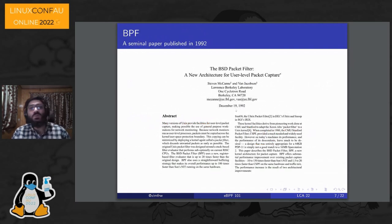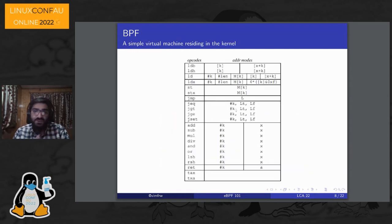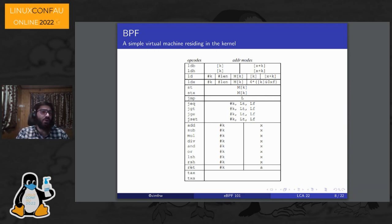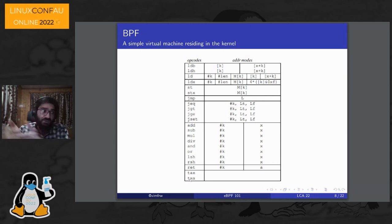In 1992, the BSD Packet Filter paper was published — a seminal paper where the folks designed a novel architecture to implement TCP dump optimally. They implemented a VM, a simple VM that resides in the kernel. It could not do much: just a bunch of loads, a bunch of stores, a little bit of jumping, very basic arithmetic operations, and returns. It had an accumulator register and one X register, so you could transfer data between them. You basically have a VM that resides in the kernel and you operate it.